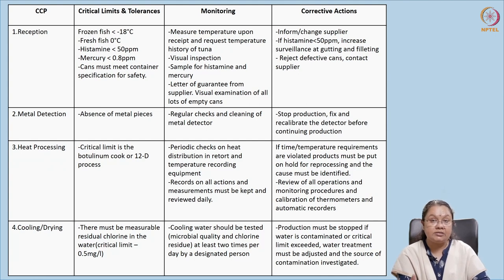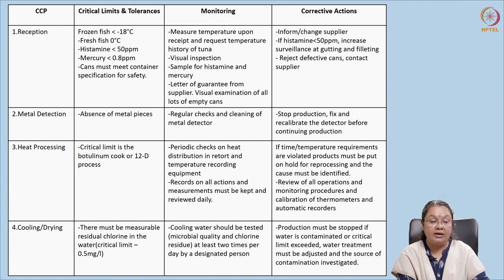At the metal detection step, any metal impurities are identified because metal can pose a physical threat and may harm consumers. The critical limit is the absence of metal pieces in the food. The metal detector must be cleaned and checked regularly. During monitoring, if any defect is observed the detector must be repaired, calibrated, and fixed so that the machine continues working correctly during production.